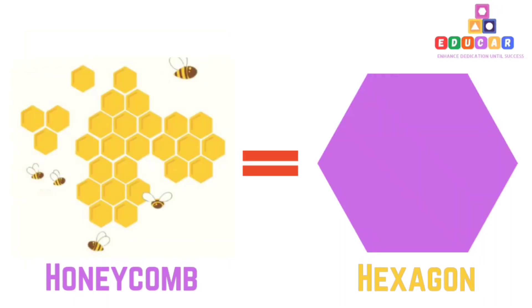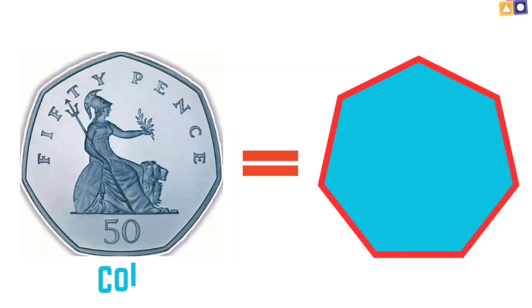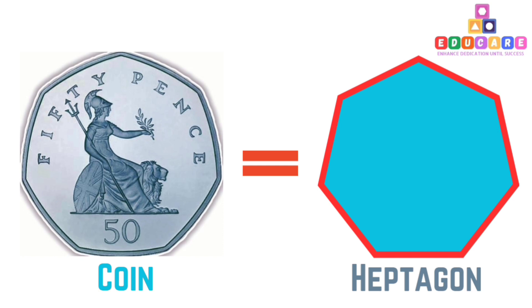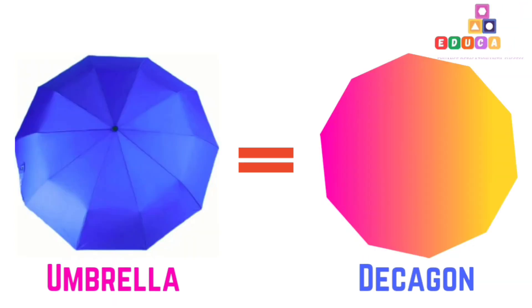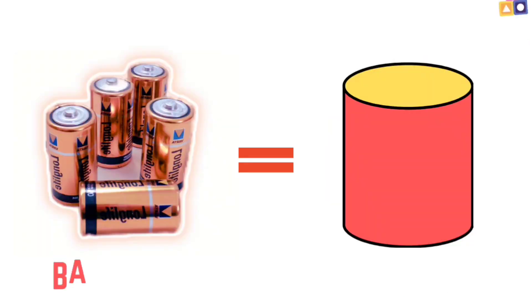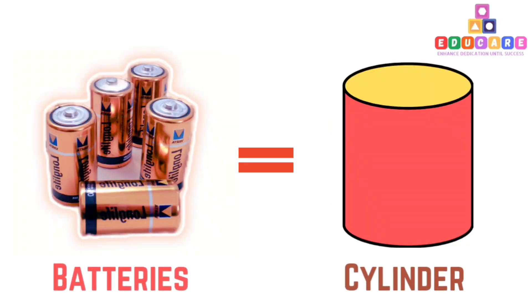Envelope is example for pentagon. Honeycomb is example for hexagon. Coin is example for heptagon. Clock is example for octagon. Umbrella is example for decagon.